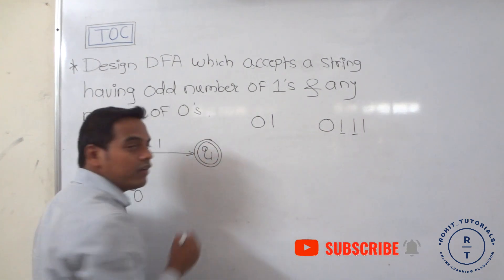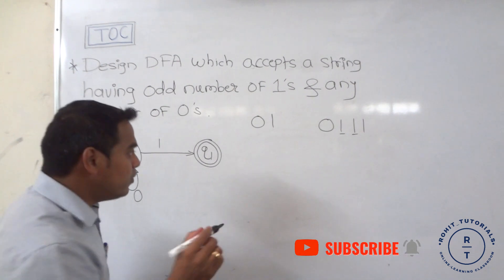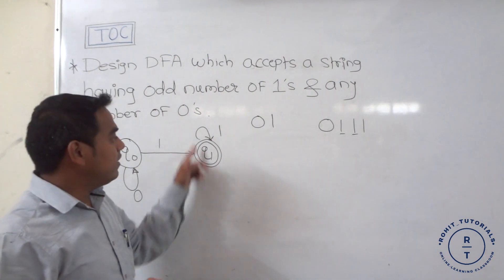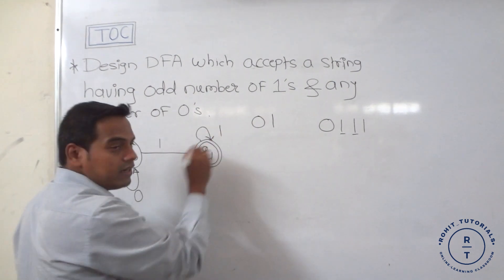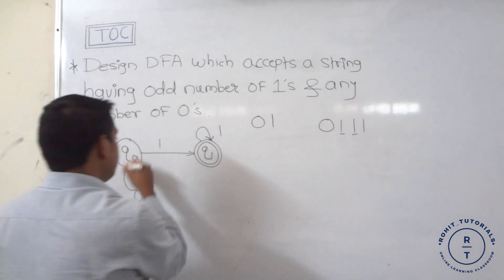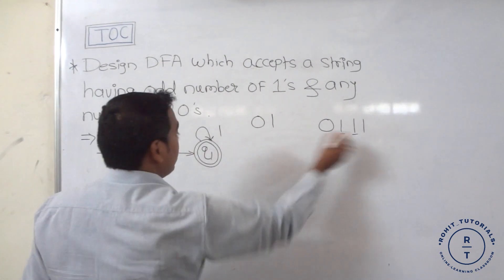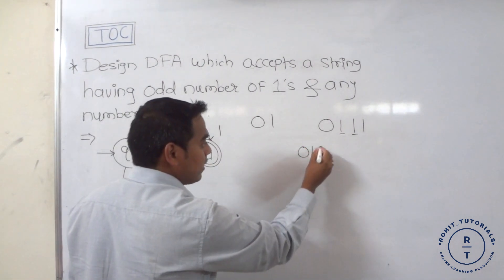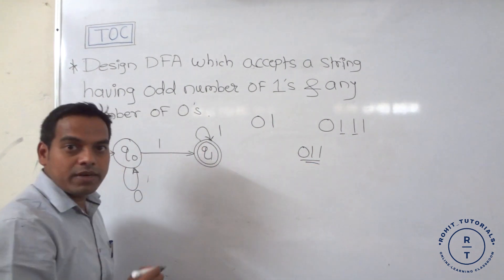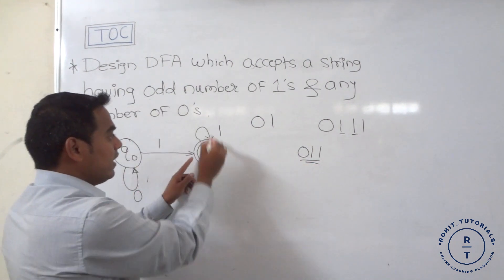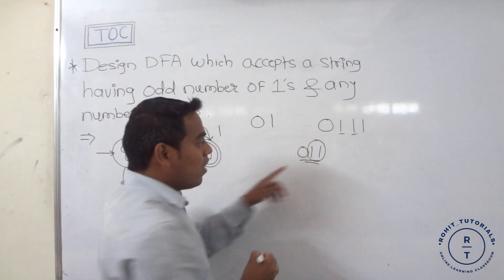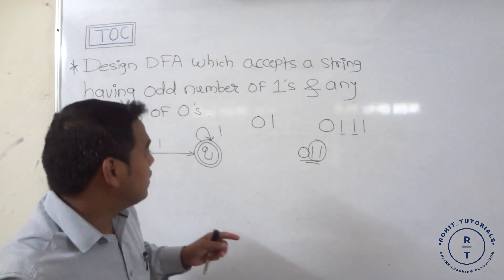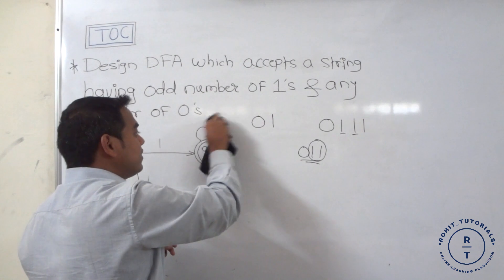If we provide a self-loop on '1' at q1, then the string '011011' with one more '1' would still be accepted — but this is incorrect. Also, if you provide the string '011', which has an even number of ones, it would still be accepted by this incorrect transition. So a self-loop on '1' at q1 is incorrect.